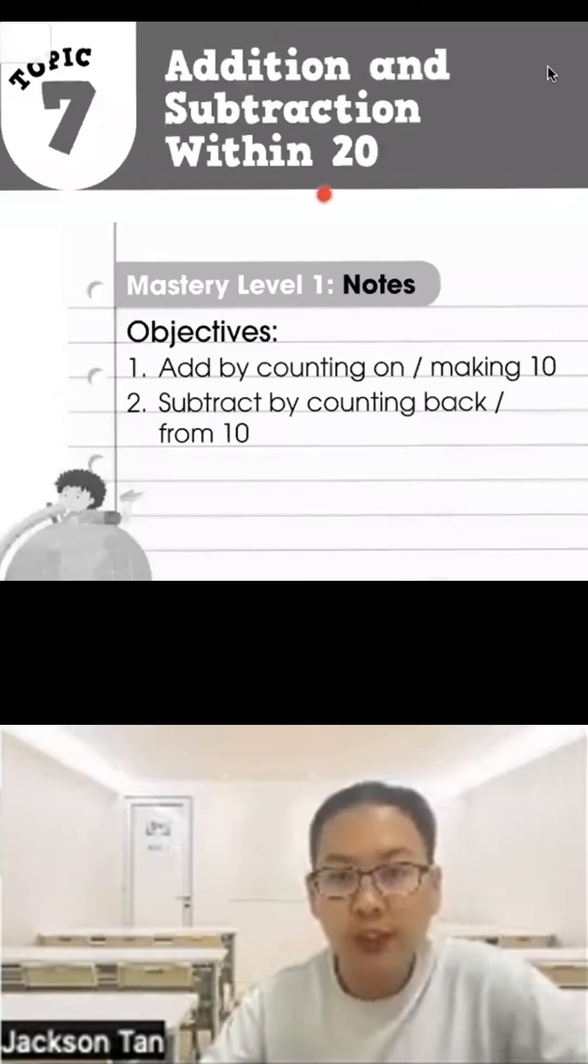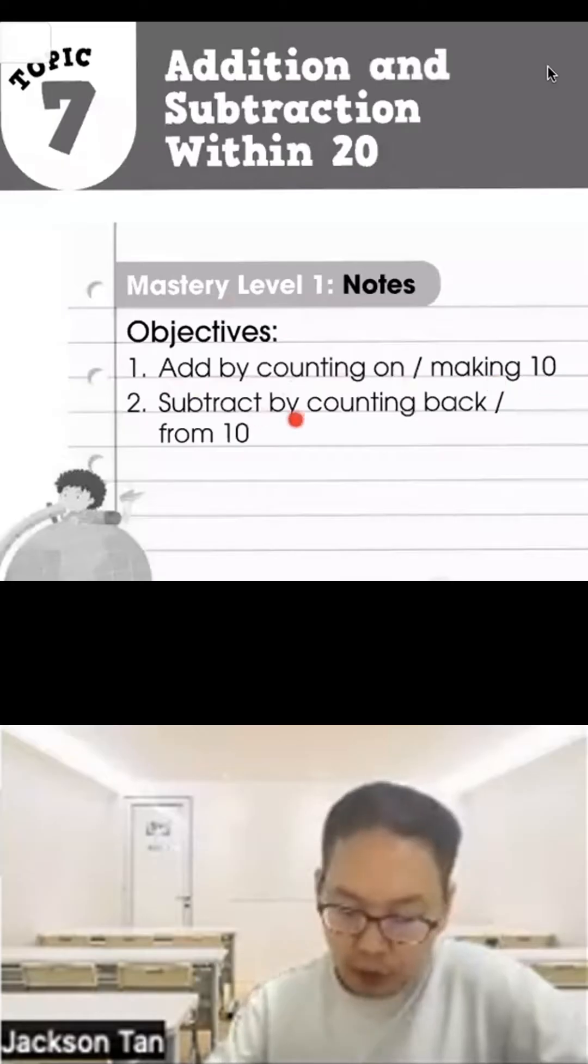Welcome to Topic 7: Addition and Subtraction within 20. Mastery Level 1 objectives are to add by counting on or making 10, and subtract by counting back or from 10.